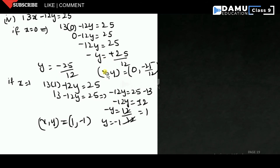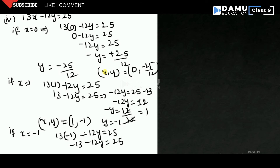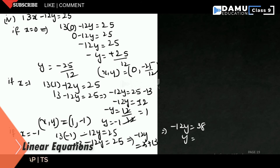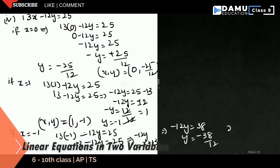For the third solution, if x = -1, then 13(-1) - 12y = 25, so -13 - 12y = 25, giving -12y = 38, so y = -38/12. The solution is (-1, -38/12).